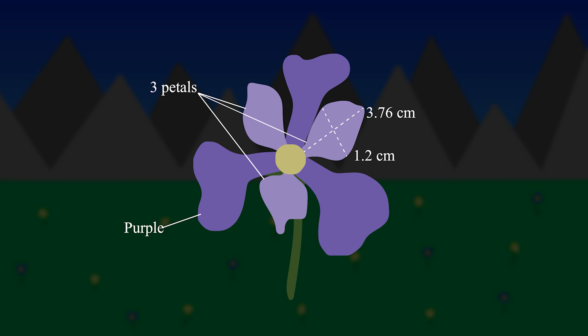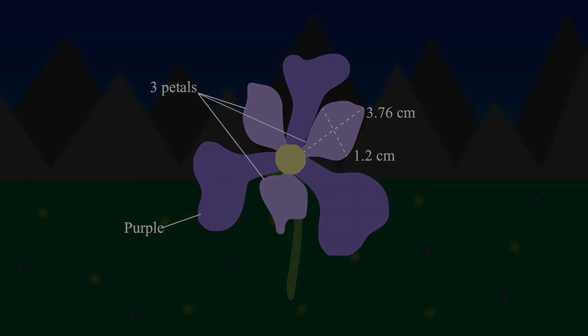A single perceptron is limited to differentiating between only two types of flowers, so you would first have to narrow the possible flower types down to two. But a large enough neural network could classify any flower if given the right measurements, and it's all being done by a bunch of perceptrons working together.